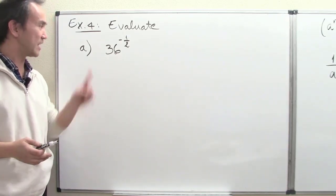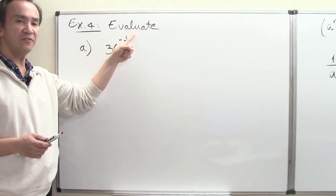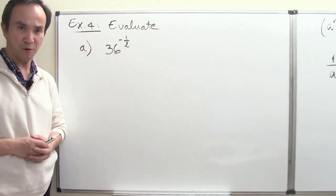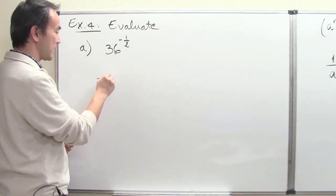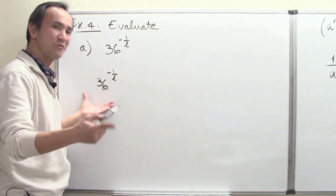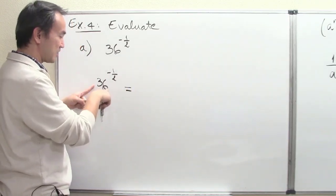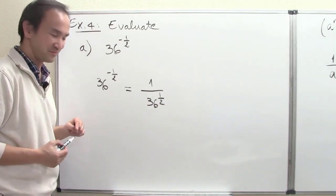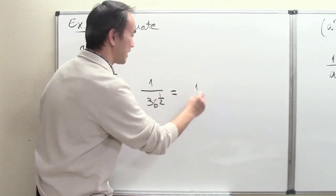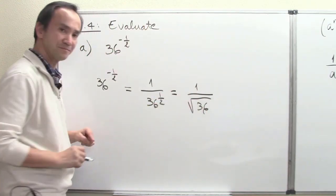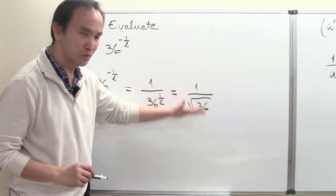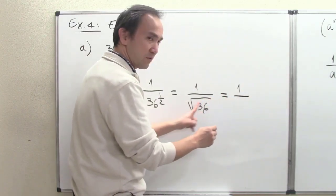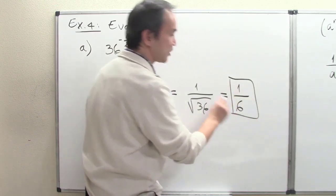Now for Example 4, part A: evaluate 36 to the negative 1 half power. From what we just learned, 36 to the negative 1 half is the same as 1 over 36 to the positive 1 half power. We can think of that further as the square root of 36 in the denominator. The square root must be computed before dividing, giving us 1 over 6. So our final answer is 1 sixth.